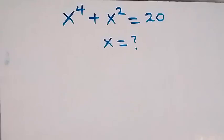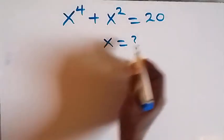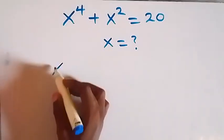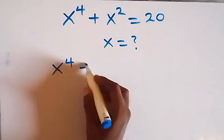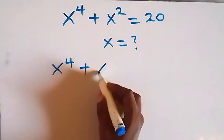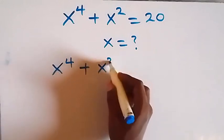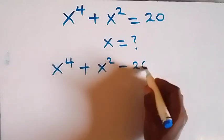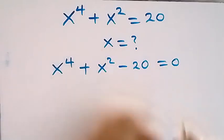Hello, you are welcome to find the value of x in this nice exponent equation. Let's take 20 to this side and we have x raised to the power 4 plus x square minus 20 equals to 0.